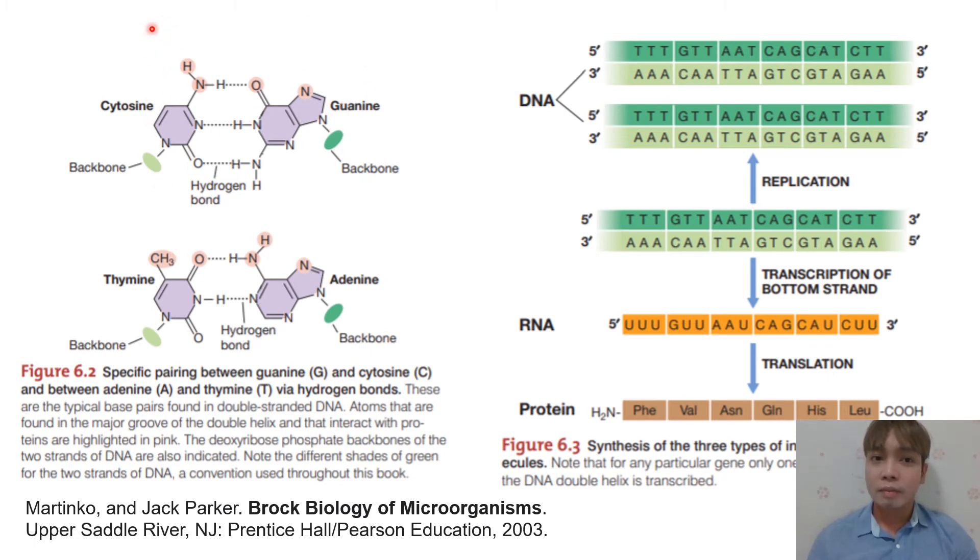This is the nitrogenous base, for example, of one strand—cytosine. Of course, the partner of cytosine is guanine. And guanine is the nitrogenous base of another DNA strand. So cytosine and guanine, you need to remember this: they have three hydrogen bonds. So there are three hydrogen bonds between cytosine and guanine.